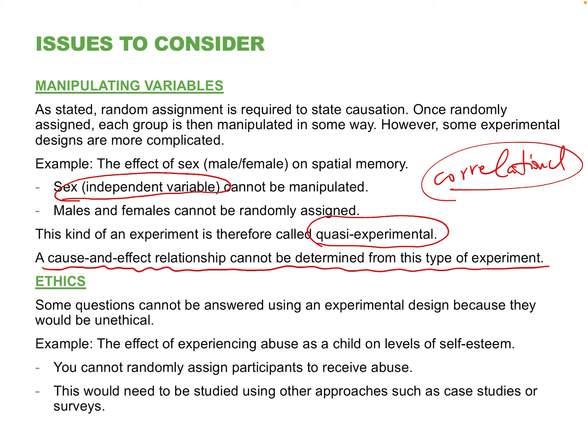Sometimes we cannot do experiments because of ethical concerns. Consider all the medical data saying that smoking is harmful — do you think human experimental trials were done to get that information? No. We use correlational methods: find people, interview them whether they're a smoker or non-smoker — that's something they're already doing. You're not handing people cigarettes at 13 years old and then measuring them 20 years later. You cannot flip a coin and force people to smoke.